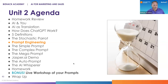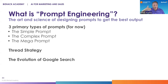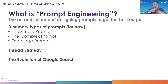I want to hand it over to Nicole — but first let me set the stage for prompt engineering. Prompt engineering is the art and science of designing prompts to get the best output. There are three primary types of prompts Nicole is going to walk you through: the simple prompt, the complex prompt, and the mega prompt. Keep in mind the prompt is actually not a single prompt but a series of prompts — what they call a thread. When you start a new chat in ChatGPT, that thread remembers the previous prompts, so you can say 'take what you just wrote and put it in a haiku format.'